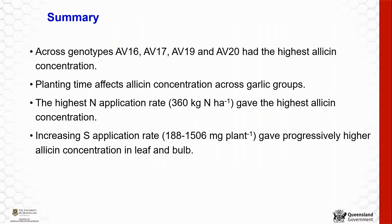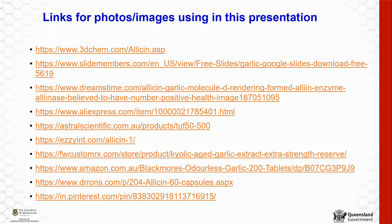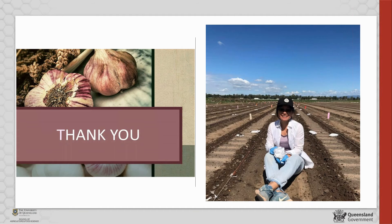To sum up, across genotypes, four garlic genotypes have really high allicin concentration, with averages of 16, 17, 19, and 20. Planting time affects allicin concentration, the highest nitrogen application rate gives the highest allicin concentration, and increasing the sulfur application rate progressively increases allicin concentration in the bulb. Thank you very much for listening.